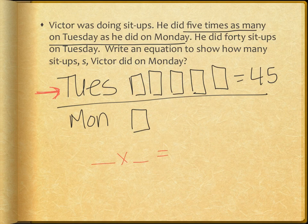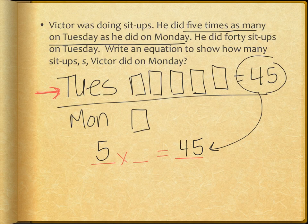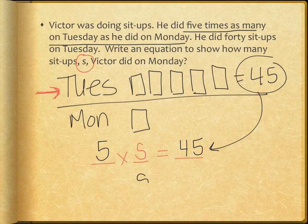Something times something equals something. The product is still the total, which in this case is the number of sit-ups for Tuesday, and that's 45. Since he did five times as many on Tuesday, there are five boxes there, so I know my first factor is five. To solve my second factor, I need to think: five times what is 45? Here's where my variable comes in. The number of sit-ups that fits in that box is going to also be the number of sit-ups he did on Monday. So five times S equals 45. Now I just solve for S, and I know that five times nine equals 45, so S equals nine. This tells me that he did nine sit-ups on Monday.